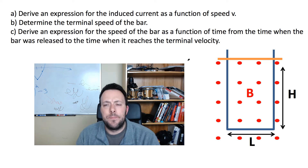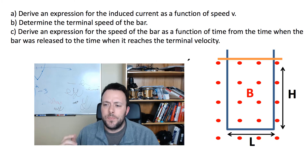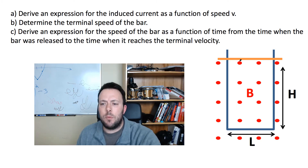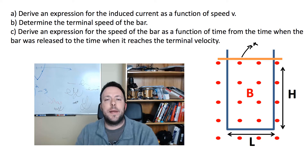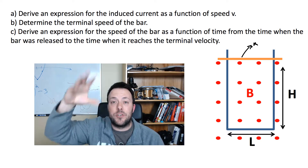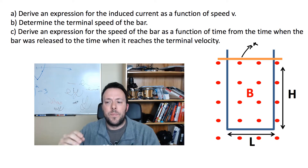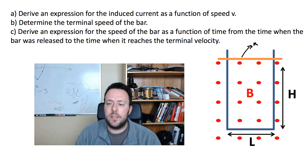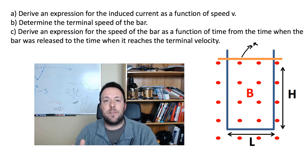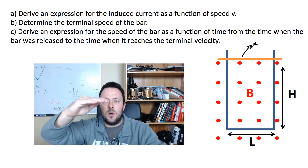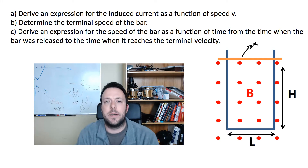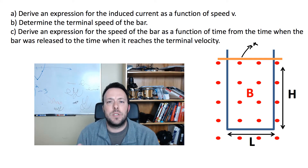Hi everybody, Dr. E here making this video today. I had a request from a student, so here's the problem. You have a metal bar with mass M touching a U-shaped rail. I'm going to let the bar drop — initially it has zero velocity. The loop is placed in a magnetic field, and as the bar drops, the area of that loop gets smaller, so there's going to be a change in flux.